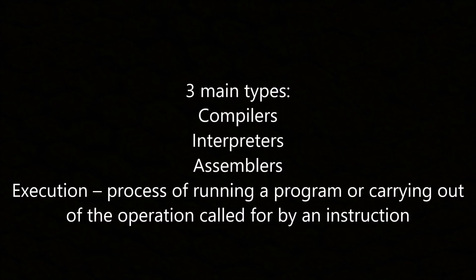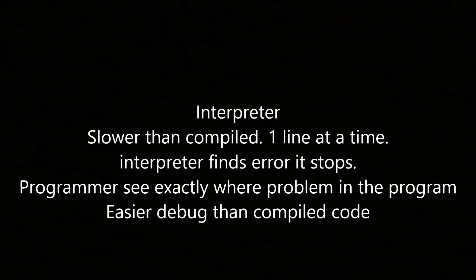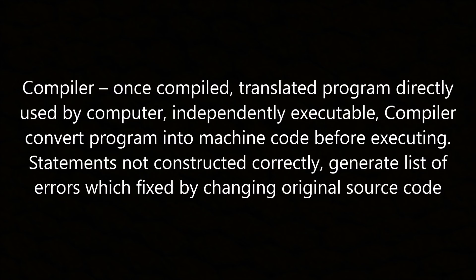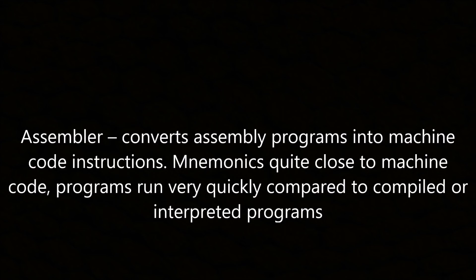The translation process. The three main types of translators are compilers, interpreters, and assemblers. Execution is the process of running the program and carrying out the operations called for by instructions. The interpreter is slower than a compiler; it processes and translates one line at a time. When the interpreter finds an error it stops, so the programmer can see exactly where the problem is — it's easier to debug than compiled code. Once compiled, the translated program is directly used by the computer and is independently executable. The compiler converts the program into machine code before executing it; if statements are not constructed correctly it generates a list of errors which are fixed by changing the original source code. The assembler converts assembly programs into machine code instructions; mnemonics are quite close to machine code, and programs run very quickly compared to compiled and interpreted programs.